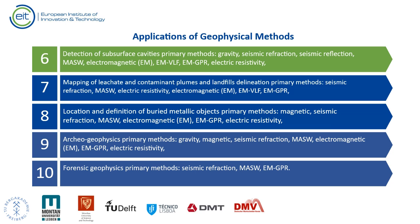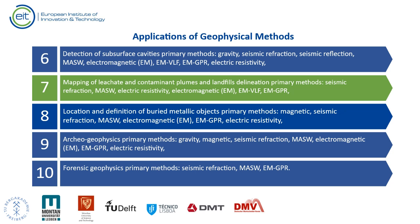For mapping of leachate and contaminant plumes and landfill delineation, primary methods include seismic refraction, MASW, electric resistivity, electromagnetic, magnetic, MVLF, and GPR. For location and definition of buried metallic objects, primary methods include magnetic, seismic refraction, MASW, electromagnetic, magnetic, GPR, and electric resistivity.